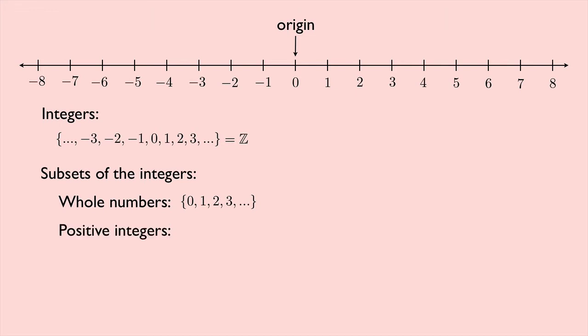Positive integers are kind of like the whole numbers, but without 0. So that would be 1, 2, 3, and so on. And then the negative integers, you can imagine starting at negative 1 and then going backwards to the left. Negative 2, negative 3,